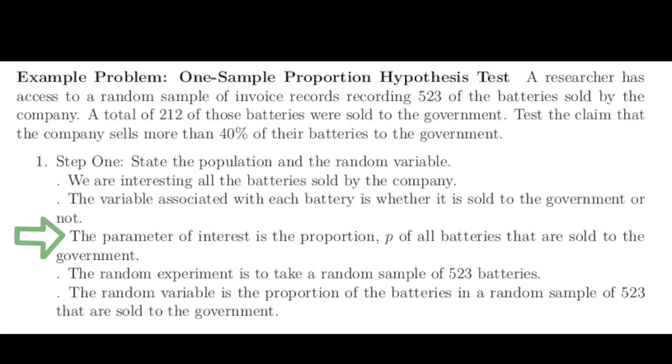That leads us to a parameter of interest for the population. What is the proportion P of all the batteries that are sold to the government? The random experiment is to take a random sample of 523 batteries. The random variable is the proportion of batteries in that random sample that are sold to the government.